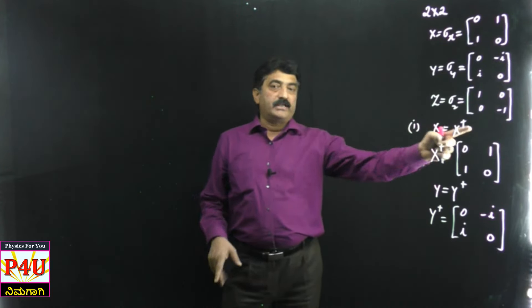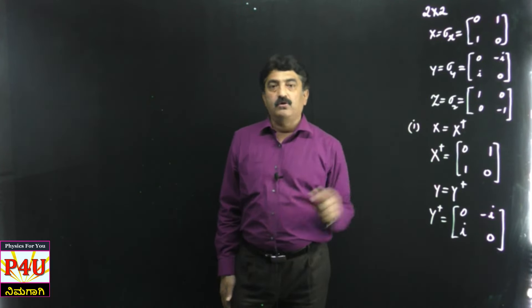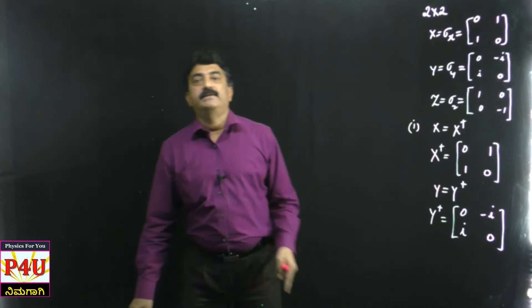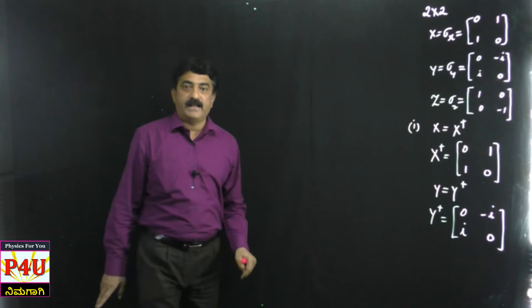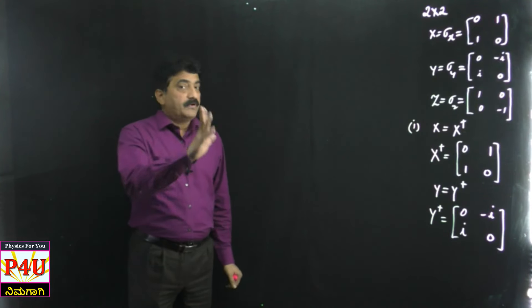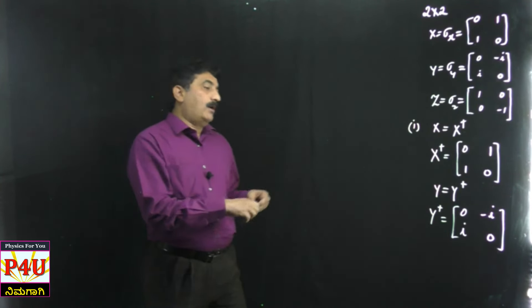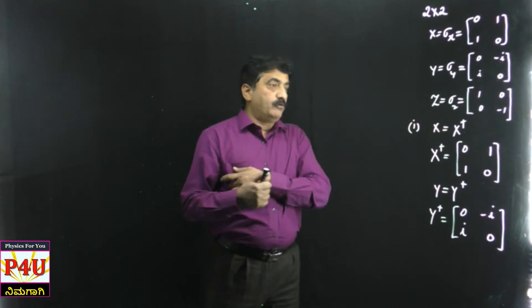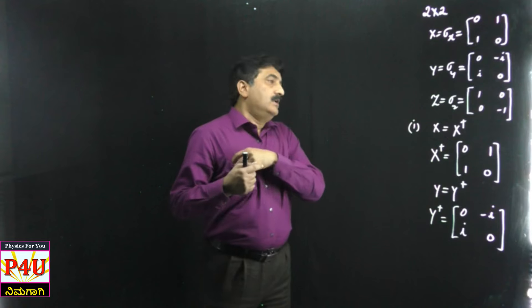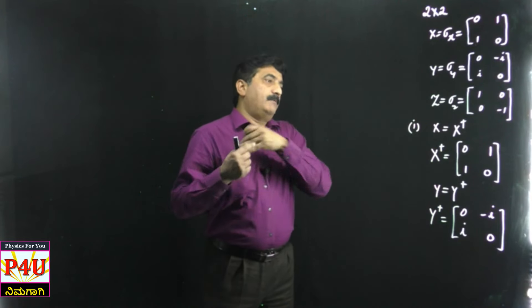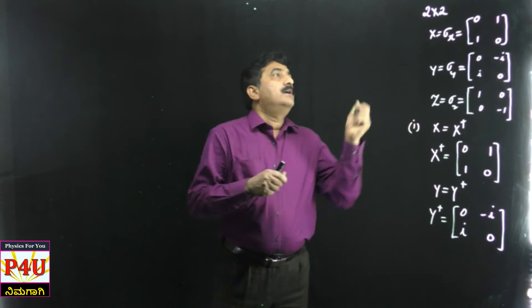So the Hermitian of a Pauli matrix is nothing but the same matrix. X equals X†, Y equals Y†, Z equals Z†. This is the first property.